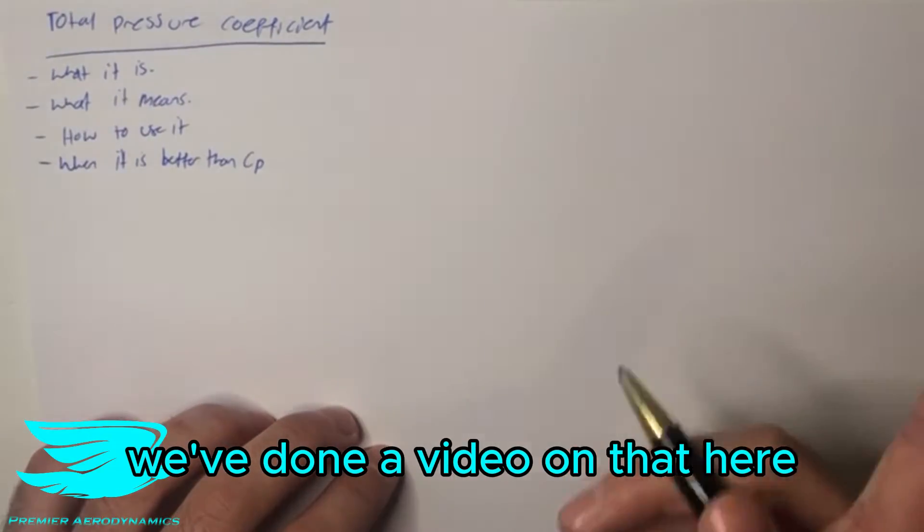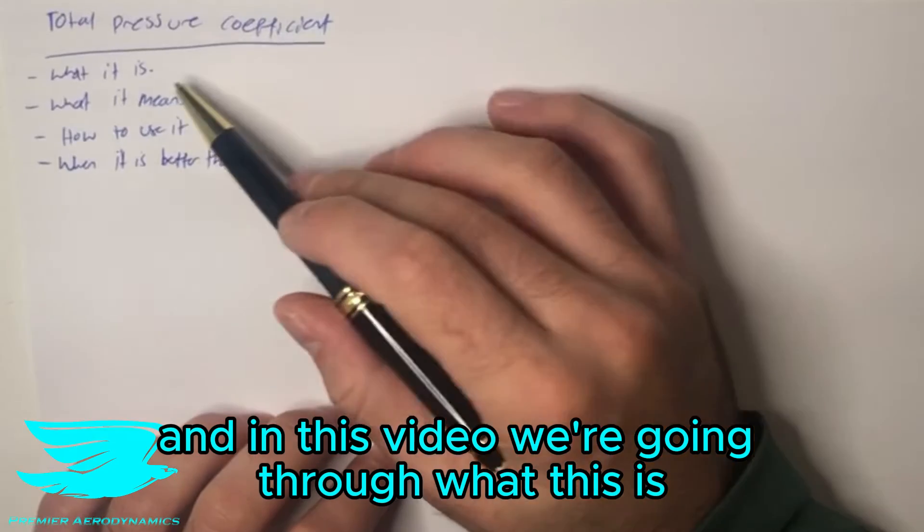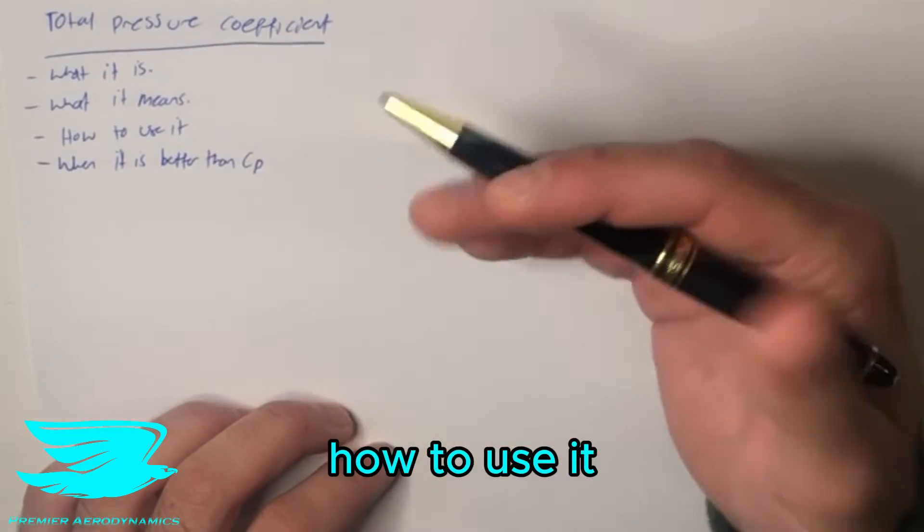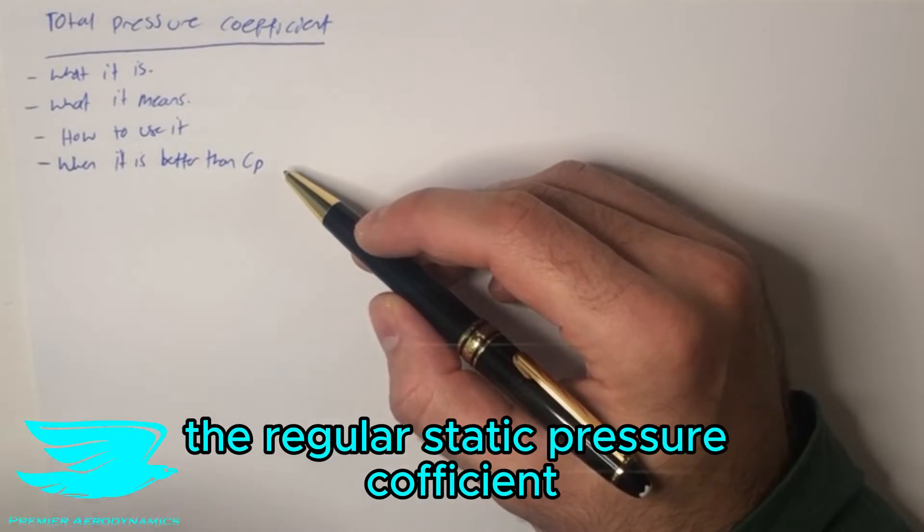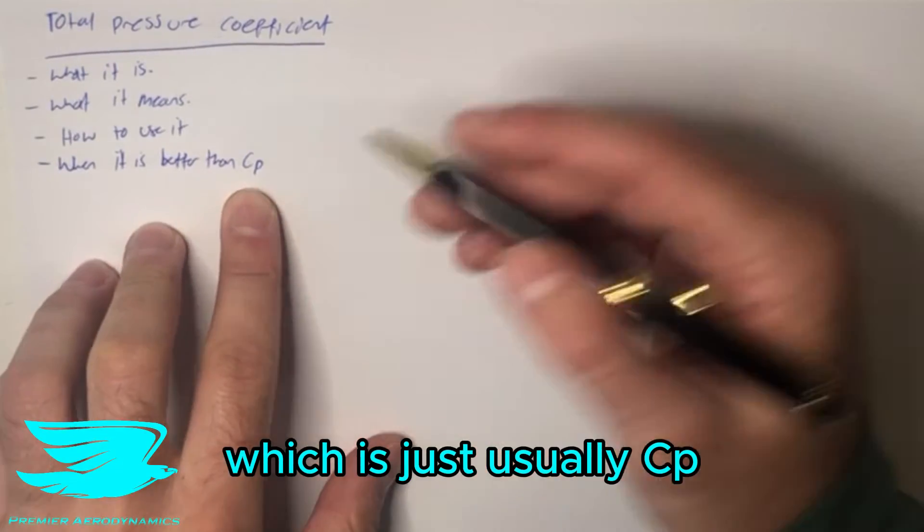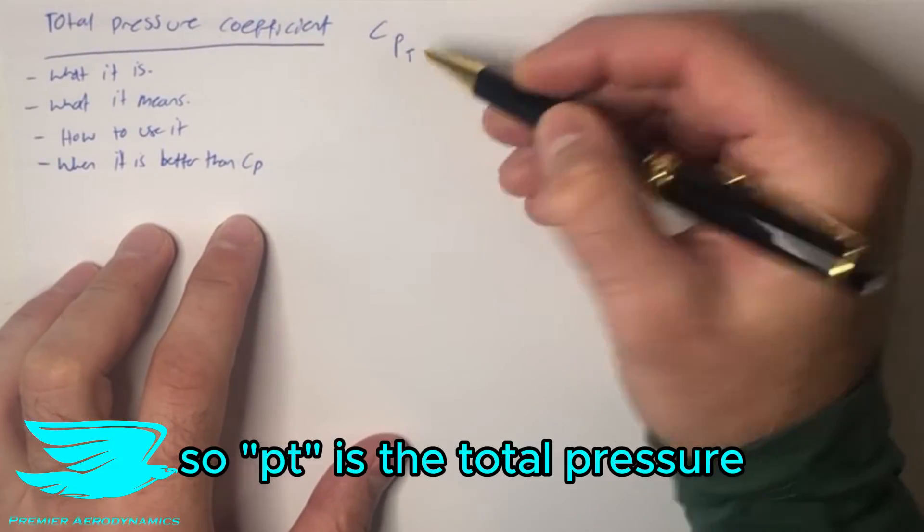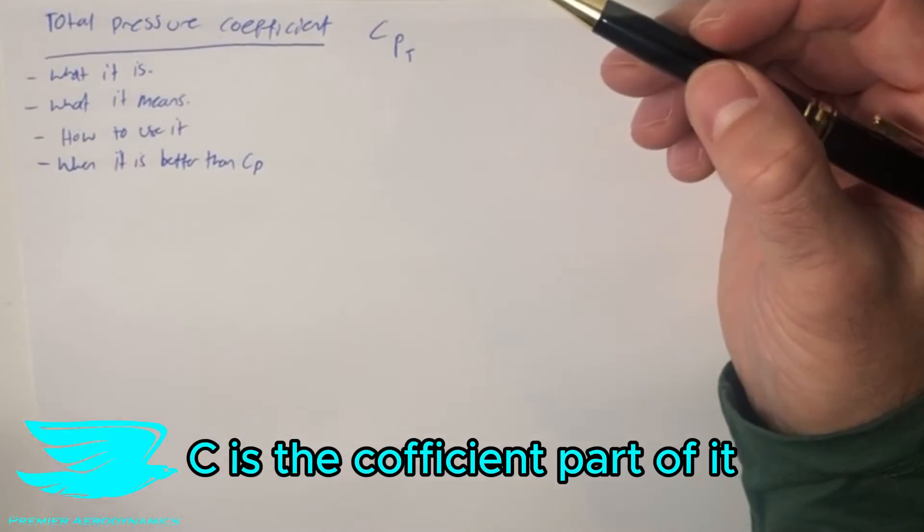We've done a video on that here and in this video we're going through what this is, the total pressure coefficient, what it means, how to use it and when it is better than the regular static pressure coefficient which is just usually CP. This is usually denoted as CPT. So PT is the total pressure, C is the coefficient part of it.